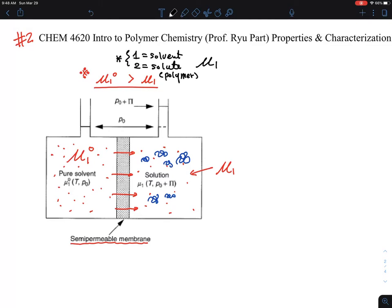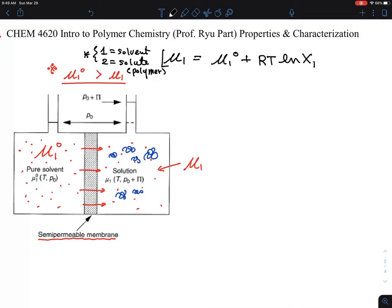And mathematically speaking, how this discrepancy can be described. It can be shown as μ₁, chemical potential of solvent. So 1 is solvent here and 2 is solute, which is here, we're going to say polymer.